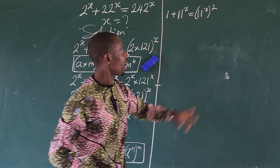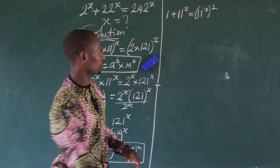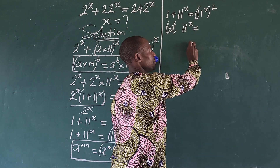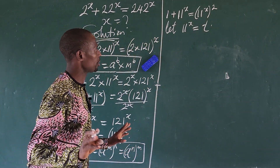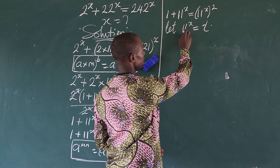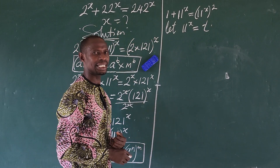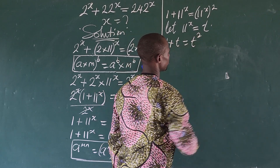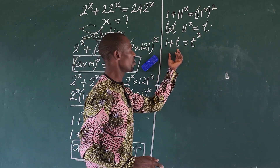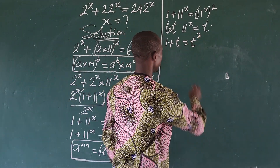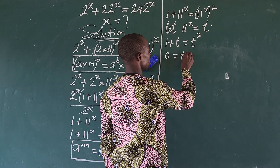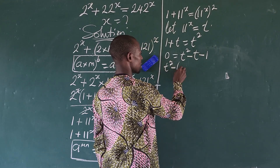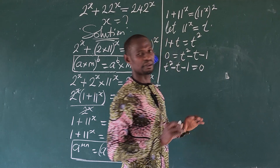We have 11 to the power of x appearing twice, so let's do a substitution. Let 11 to the power of x equal t. Then the equation becomes 1 + t equals t squared. Rearranging by moving all terms to one side gives us t squared minus t minus 1 equals zero.